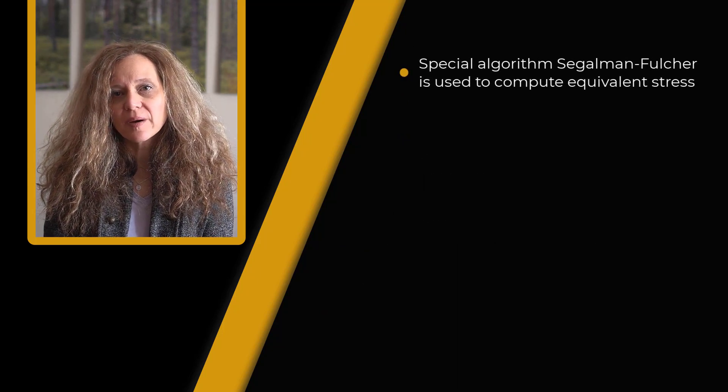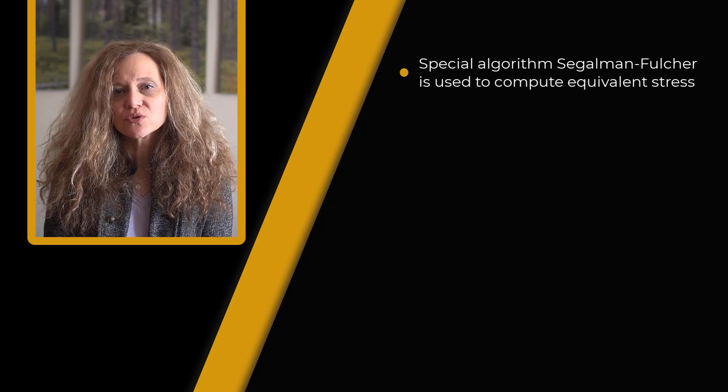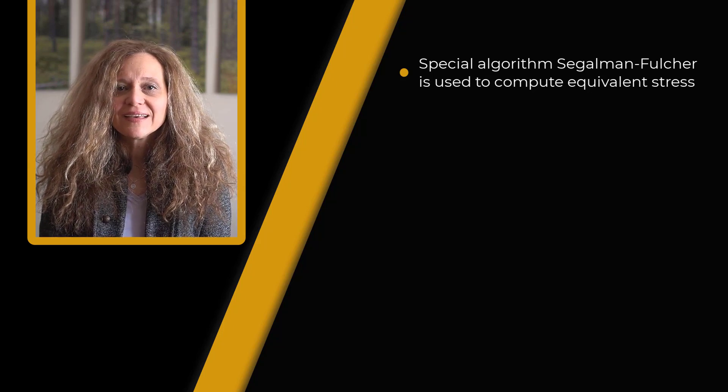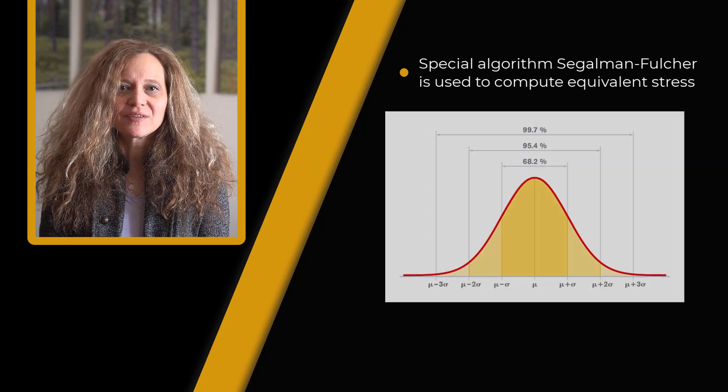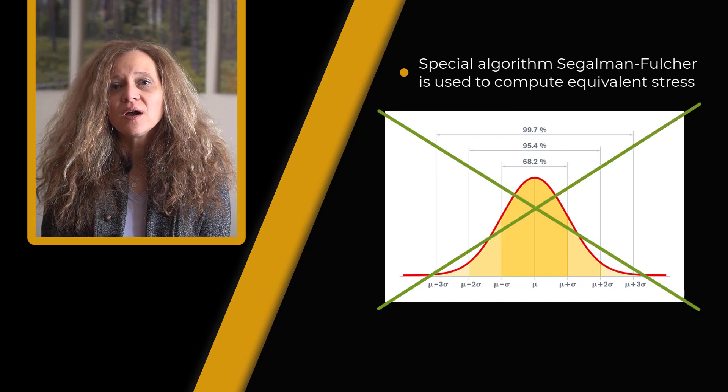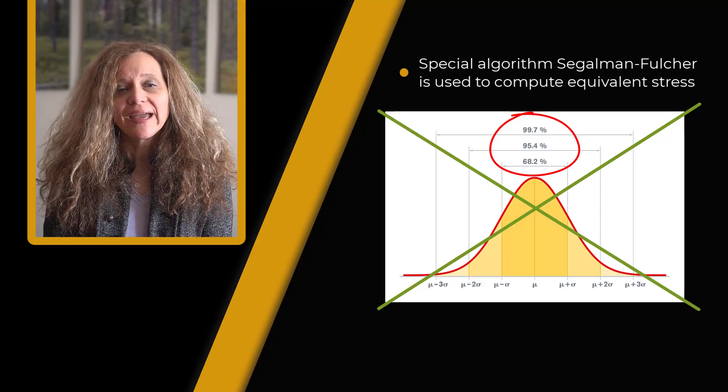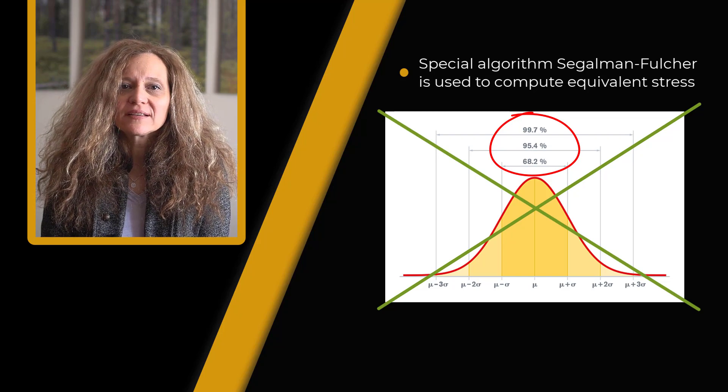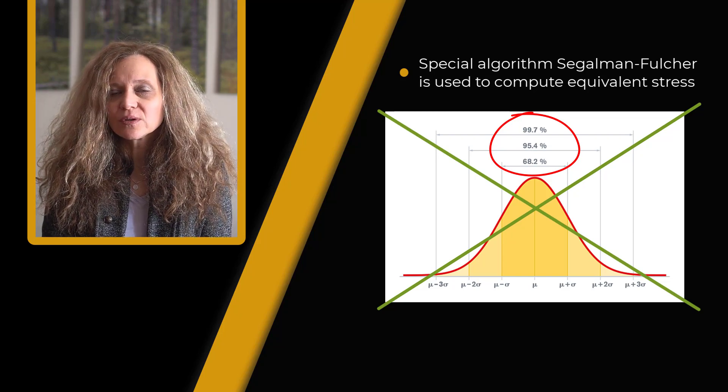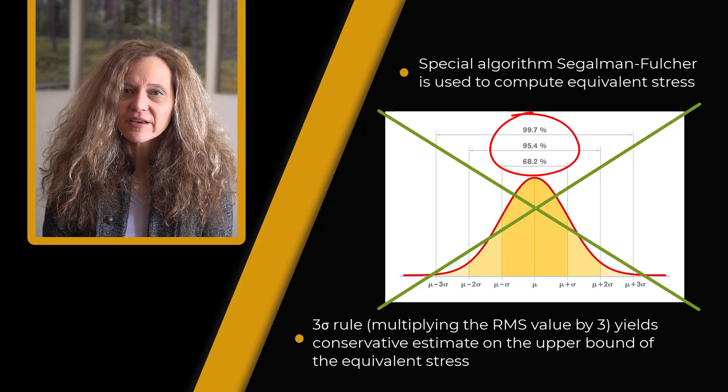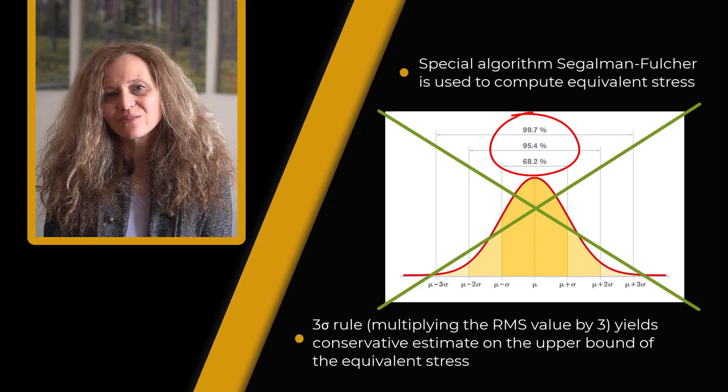Because of these limitations on equivalent stress, a special algorithm by Segalman-Fulcher is used to compute a meaningful value of equivalent stress. The probability distribution of this equivalent stress is neither Gaussian nor is the mean value zero. So probability values of 1, 2, and 3 sigma discussed prior no longer hold. However, one can still use the 3 sigma rule multiplying the RMS value by 3 which will yield a conservative estimate of the upper bound of the equivalent stress.